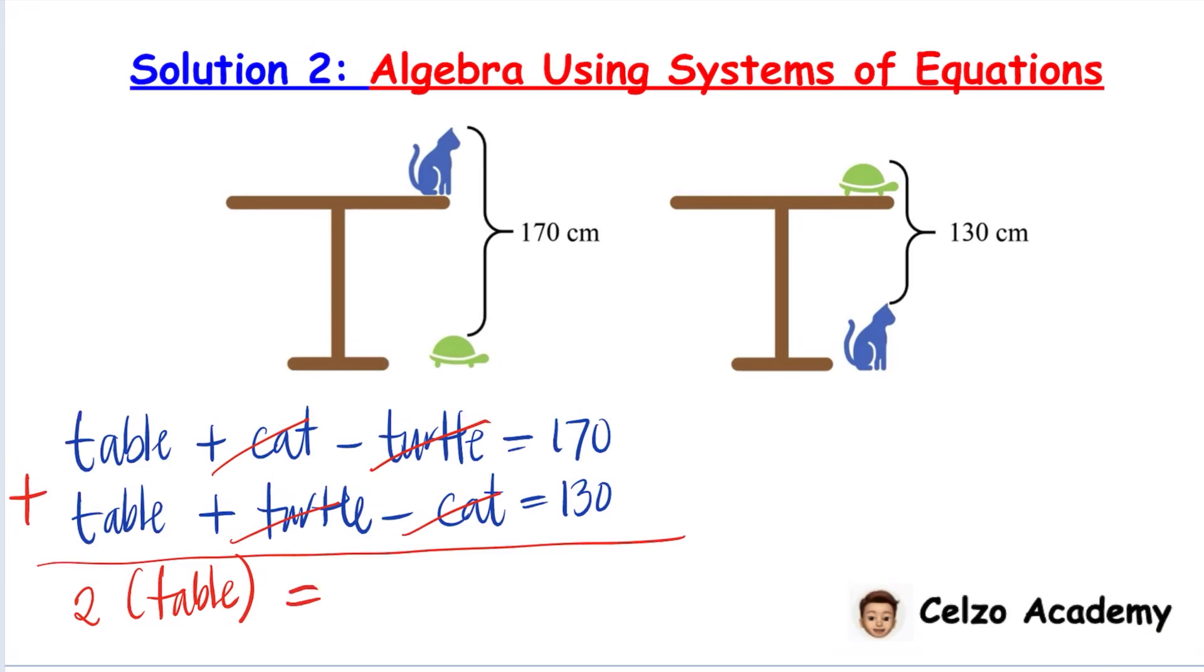So now we have is equal to 170 plus 130, which is 300.